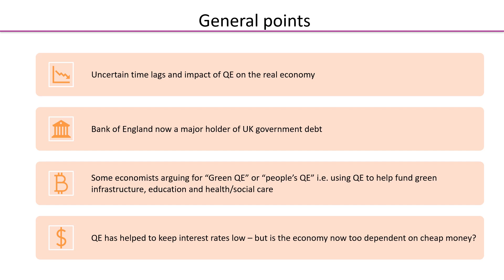The Bank of England is now a major holder of UK government debt — it has an awful lot of those IOUs in its vaults. Some economists are arguing for a green QE or a people's QE, using quantitative easing to help fund green infrastructure, education, health care, and social care, feeling this is a much better way of creating money electronically rather than buying back bonds.